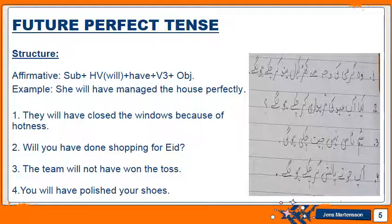Now the situation and use of future perfect tense. Future perfect tense is used for actions that will be completed before some other point in the future. You can say that future perfect tense is used when we are talking about an action that will be complete at some point in the future. Now see the structure — to make an affirmative, we use subject plus helping verb 'will have' plus the third form of the verb.